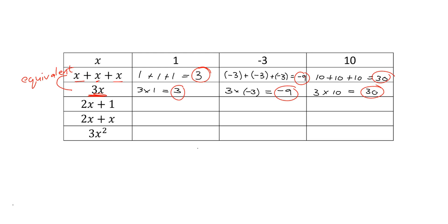Okay, let's check. 2x plus 1 says: take x, multiply it by 2 and then add 1. So when x is 1, we're going to say 2 times 1 plus 1 and we get 3. Now that is the same answer as we got before, but we can't say yet that it's equivalent, because for it to be equivalent we have to check that it's true for every single value of x. So here, 2 times minus 3 plus 1, you'll get minus 6 plus 1, which is minus 5. And straight away we can see we're getting a different answer, so it's not an equivalent expression.